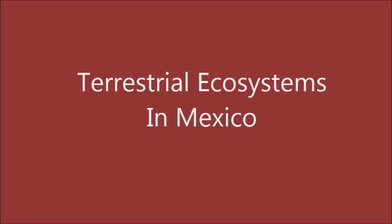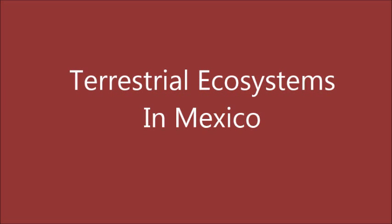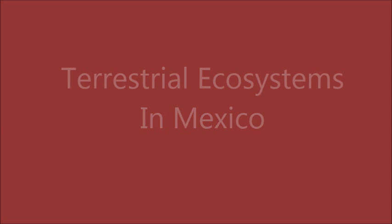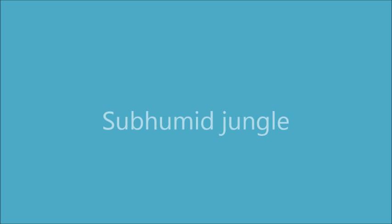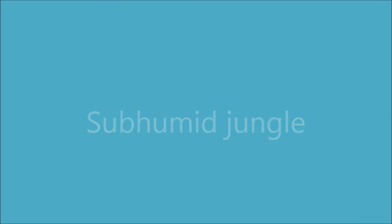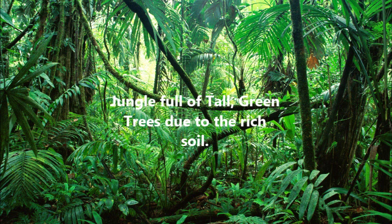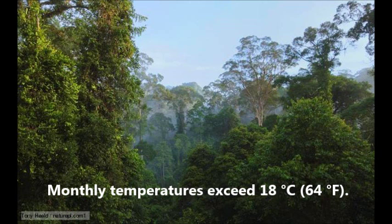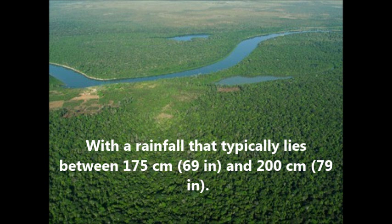Terrestrial Ecosystems in Mexico. Subhumid Jungle. The jungle is full of tall green trees due to the rich soil. It has monthly temperatures that exceed 18 Celsius, with a rainfall that typically lies between 175 centimeters and 200 centimeters.